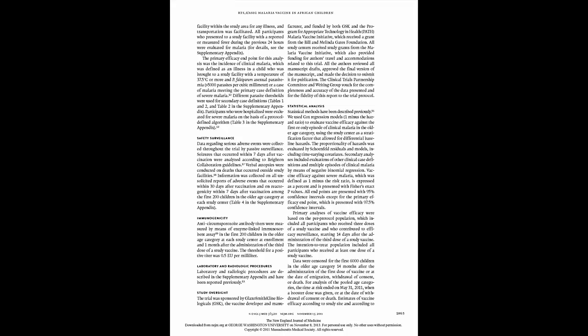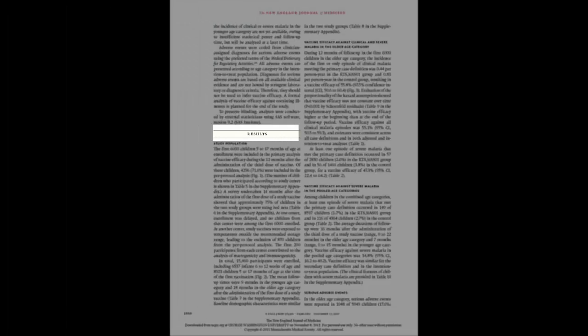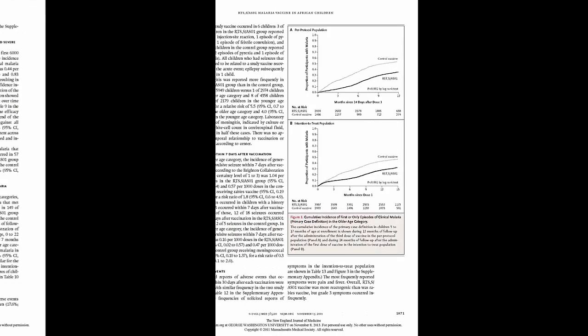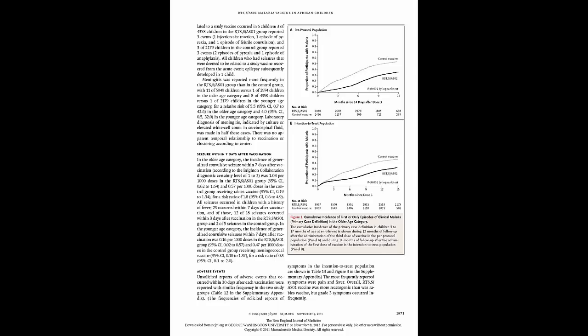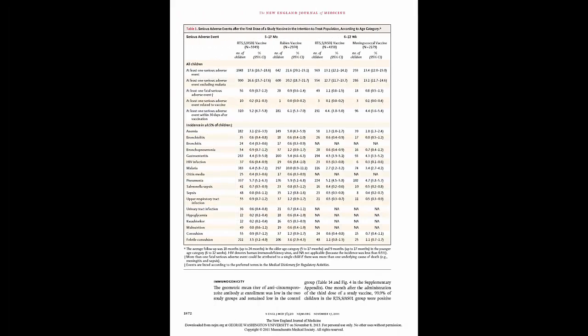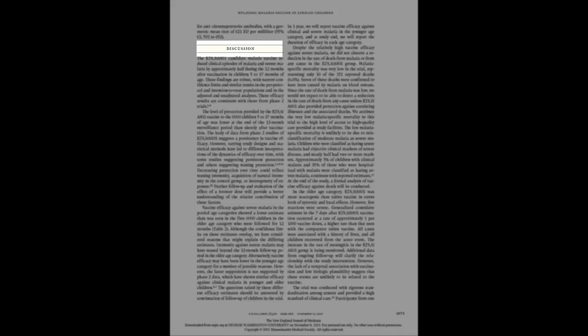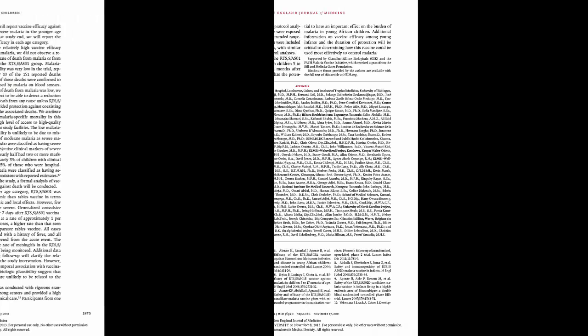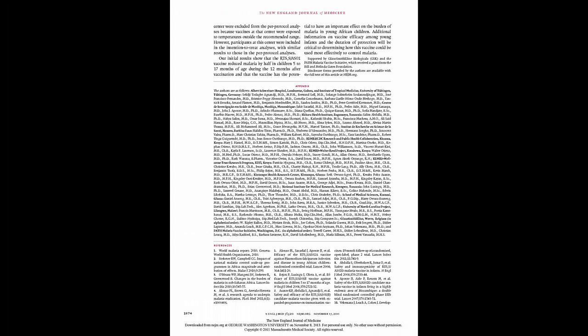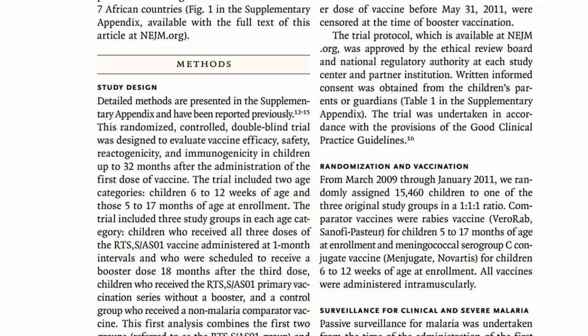If the headings do not mirror the basic research format — introduction, method, result, and conclusion — this can be an indication the article may be something other than empirical research. Another check is reviewing the methods section. Skimming the research process listed under the methods section also provides a way to see if the article is indeed a report of original research.